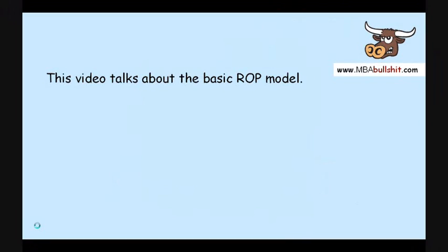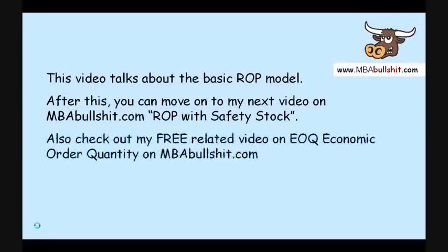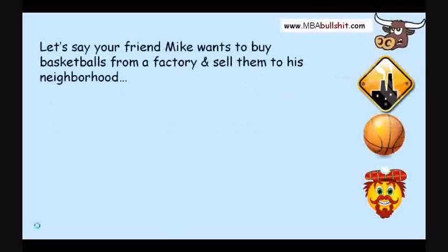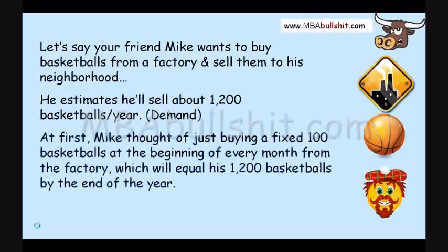This video talks about the basic reorder point model, and after this you can move on to the next video about reorder point with safety stock. Let's start with a story. Mike wants to buy basketballs from a factory and sell them to his neighborhood. He estimates he'll sell about 1200 basketballs per year — that is the yearly demand. He thought of buying a fixed 100 basketballs at the beginning of every month, which equals 1200 by the end of the year.